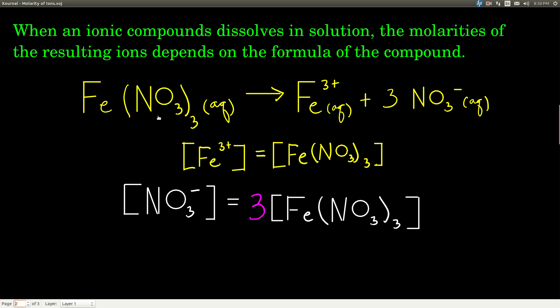For example, iron 3 nitrate. When you put it into water, it dissolves into the iron 3 ion and 3 nitrate ions. You know this because when you look at the formula, you know it's an ionic compound, first of all, because iron is a metal and nitrogen and oxygen are nonmetals, or nitrate is a polyatomic ion.